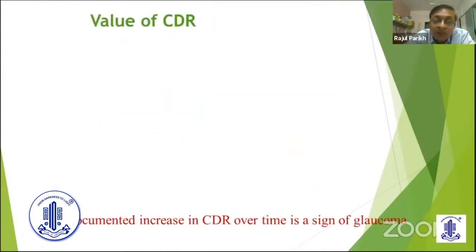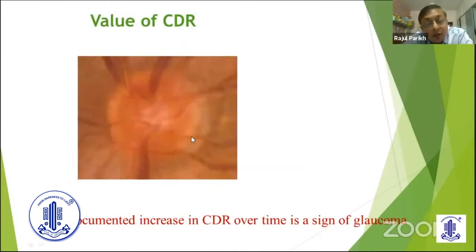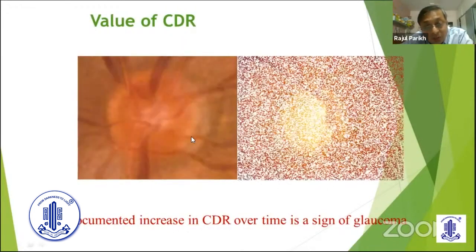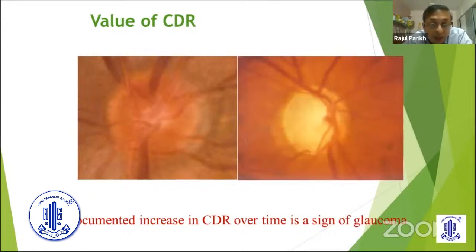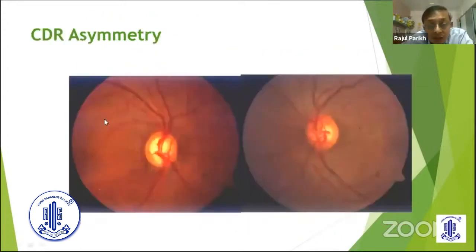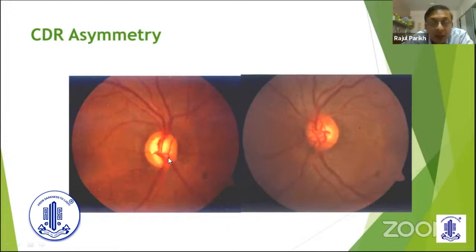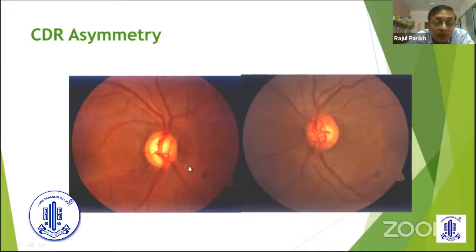CDR does have value. If the patient has a very small cup-disc ratio that has increased over a period of time, that is a definite sign of glaucoma. Second, if the two discs are similar in size but the cup-disc ratio is different — you can see here, one has a small cup-disc ratio and the other is big — that asymmetry is definitely a sign of glaucoma. Of course, there is a near notch also visible. So cup-disc asymmetry is something you must remember.